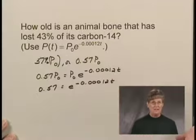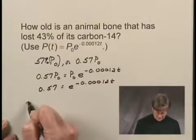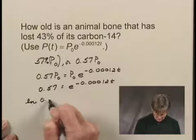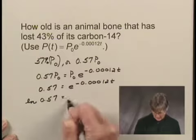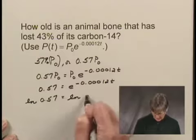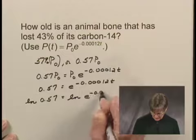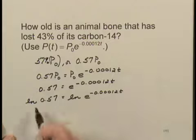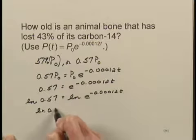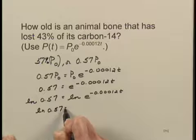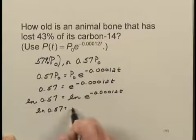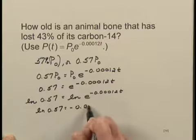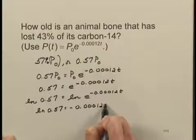Now I'm going to take the natural logarithm on both sides. I'll have ln(0.57) = ln(e^(-0.00012t)). On the left, I will rewrite ln(0.57). On the right, what I have is just the exponent, -0.00012t.